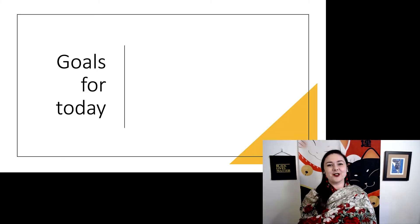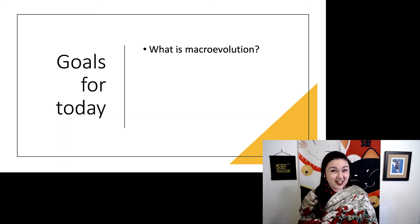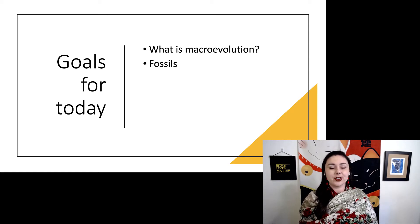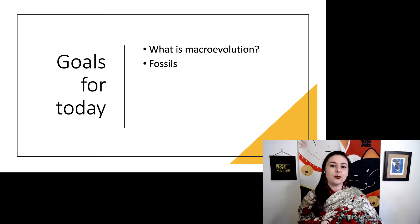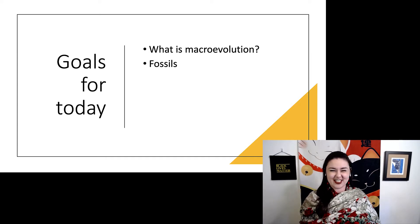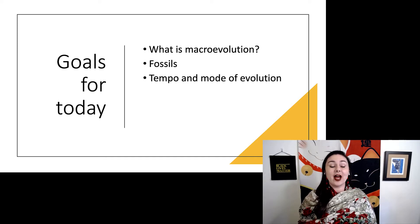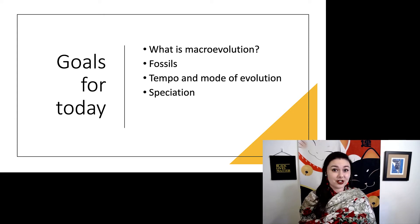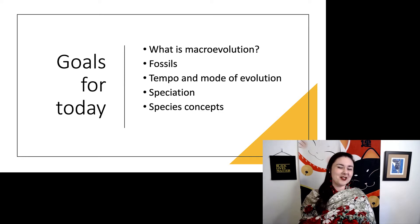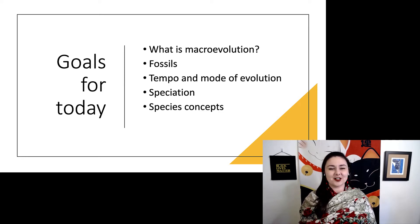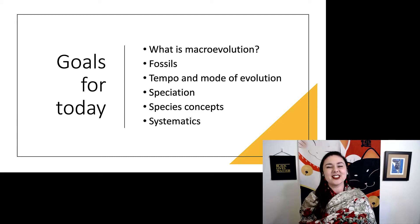To understand macroevolution, there are a couple things we're going to talk about. First, we'll talk about what it is — always a good place to start. Then we'll talk about fossils, since these are one of our primary sources of information. This will also help us understand how we know all of the information from our Brief History of Life lecture. Next, we'll talk about the tempo and mode of evolution, then speciation — how new species form. Then we'll talk about species concepts and how everyone likes to argue over how we should define this very important concept. And lastly, we'll talk about systematics and how we organize and name all the different species.